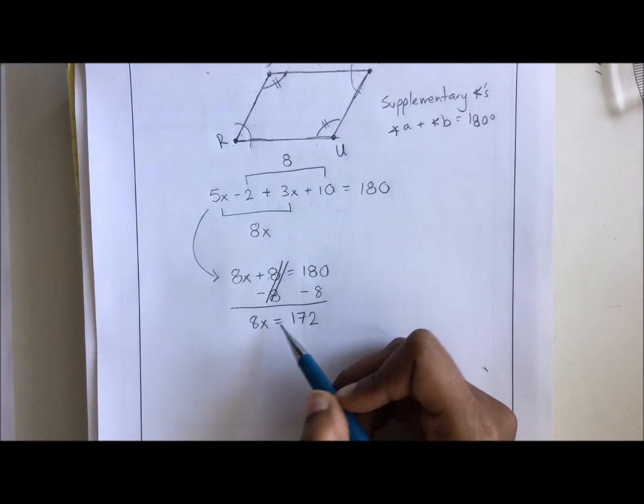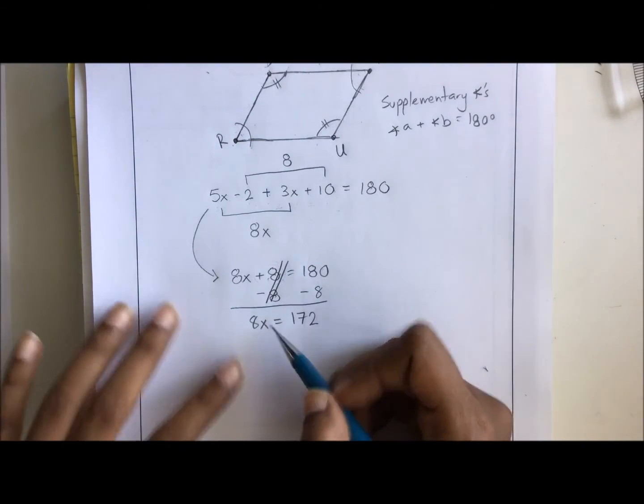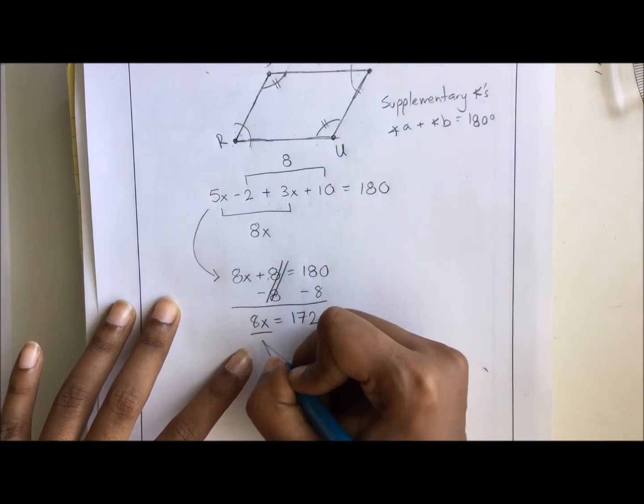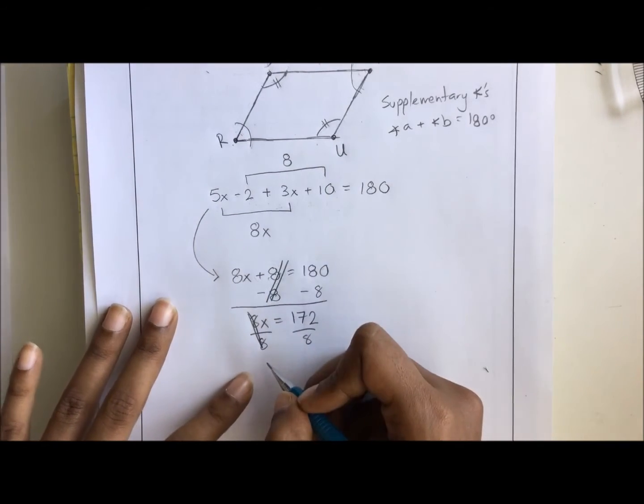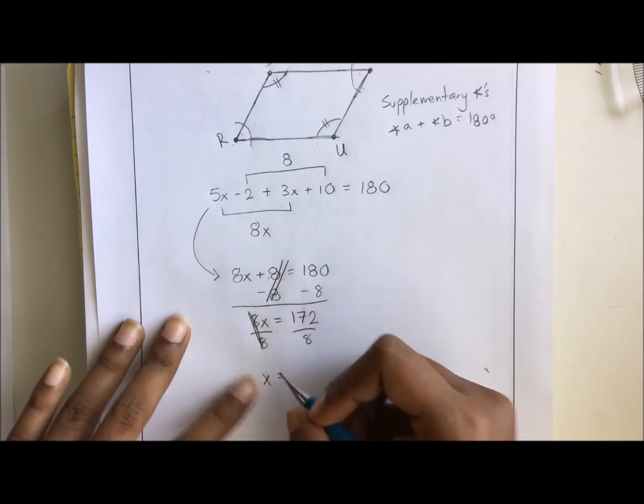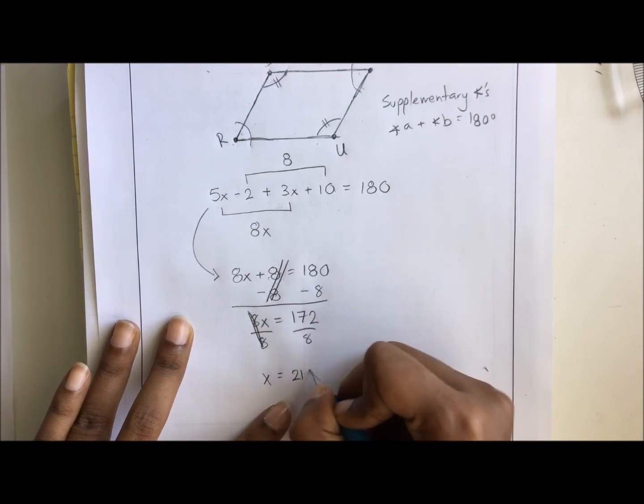Let's see, we have 8x equals 172 or 8 times x equals 172. Inverse operation means we are dividing by 8. x equals 172 divided by 8 is going to give us 21.5.